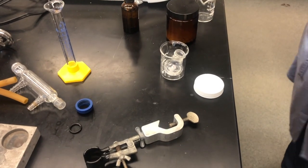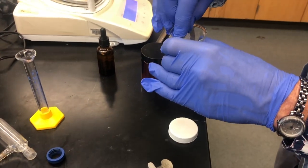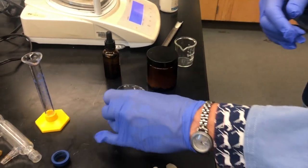The next step is adding our boiling stones, one or two of them, to the mixture. Boiling stones are carefully added at this stage because it's much harder to add them later on.